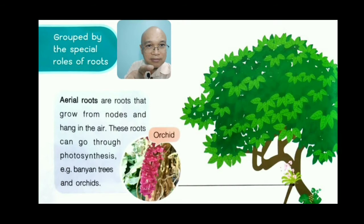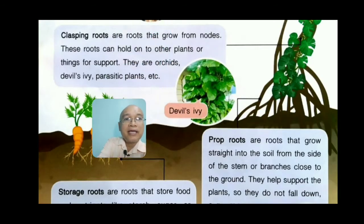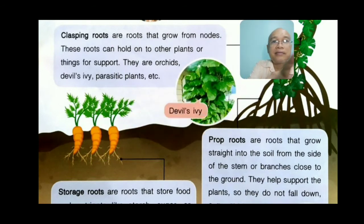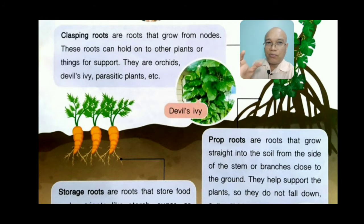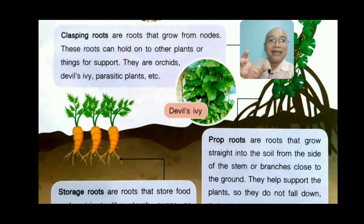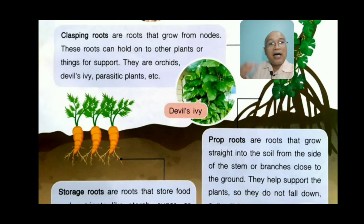You can see aerial roots in the picture. Clasping roots are roots that grow from nodes and can hold on to other plants or objects for support. Examples are orchids, devil's ivy, and parasitic plants — parasitic meaning dependent on other plants to grow.